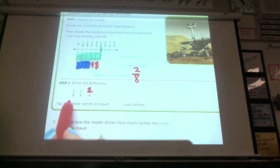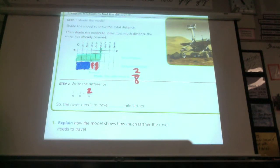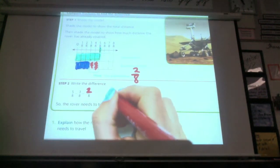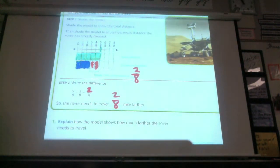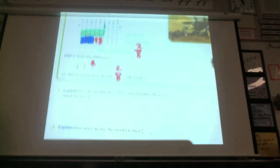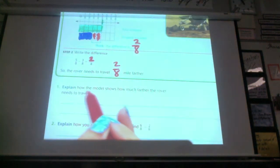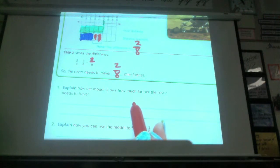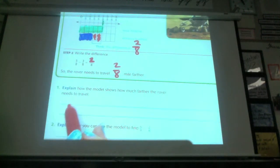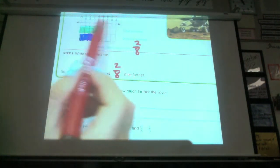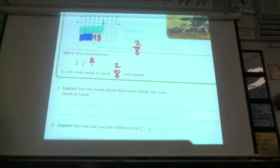Do we subtract the denominator? No. No, because then we'd end up with zero and we'd have two over zero, which is not the same thing. So the rover needs to travel two-eighths of a mile still. Before you write all this down, I want you to also think about, explain how the model shows how much further the rover needs to travel. Use simple words to explain how this model showed us that that works. Go ahead and do that.